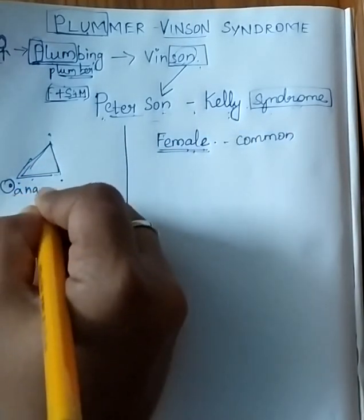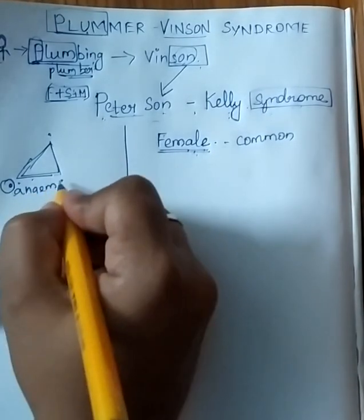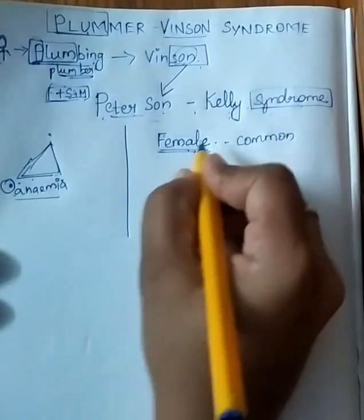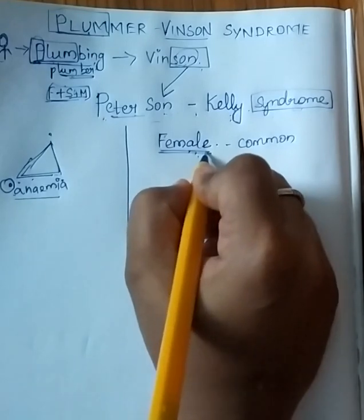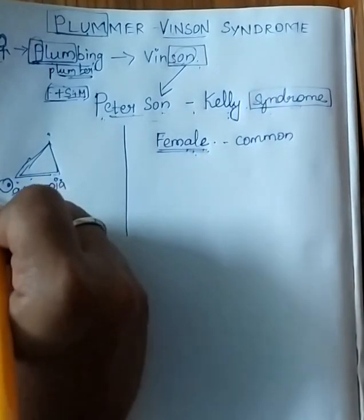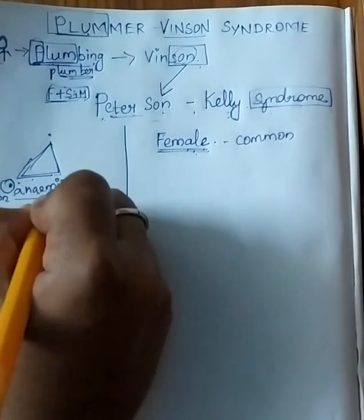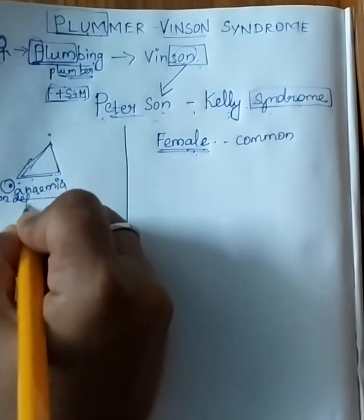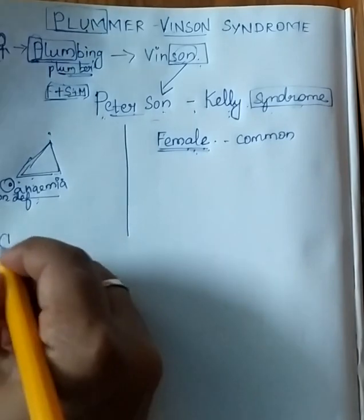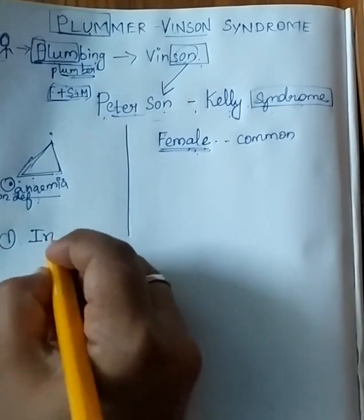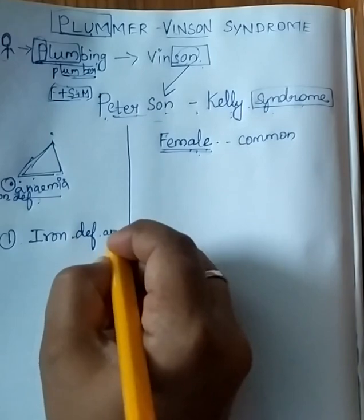So the first triad symptom: the mother's name was Anemia, and she was an iron lady — very bold, an iron lady. Iron anemia means iron deficiency anemia. So the first triad symptom is iron deficiency anemia.